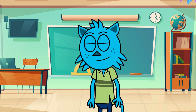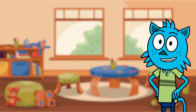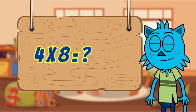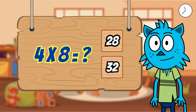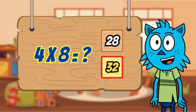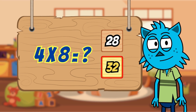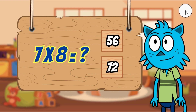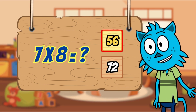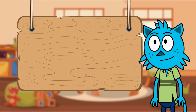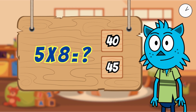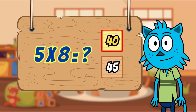Now it's time to play a game. Can you match the answers correctly? Let's see. Can you find the right match for four times eight? That's right, 32. Keep going. What's seven times eight? Yes, 56. You got it. What about five times eight? It's 40. Well done, kids.